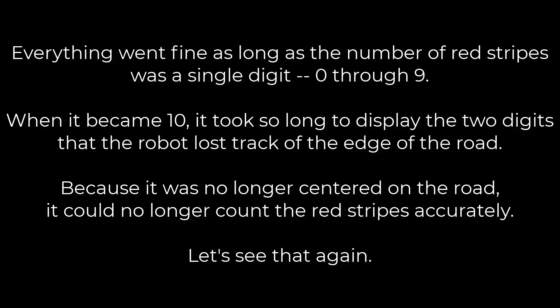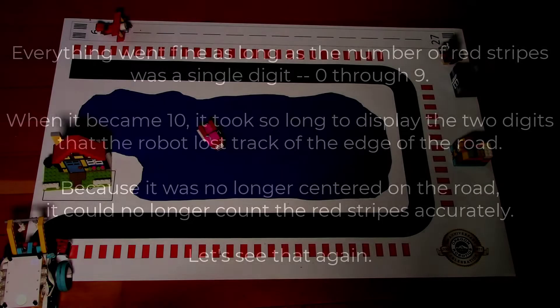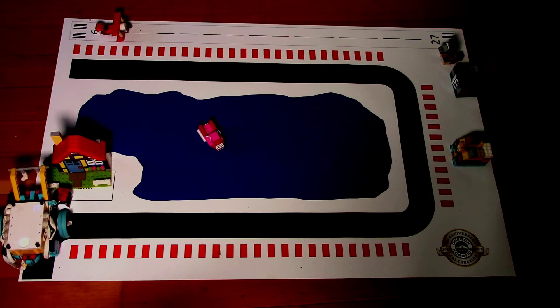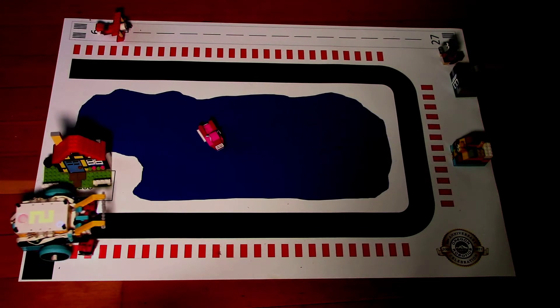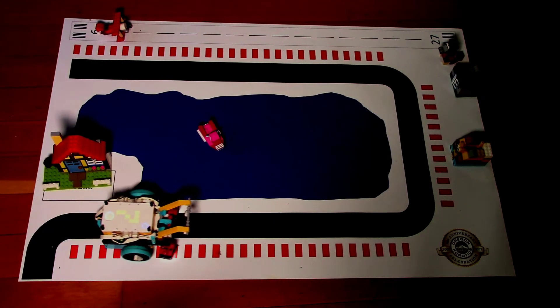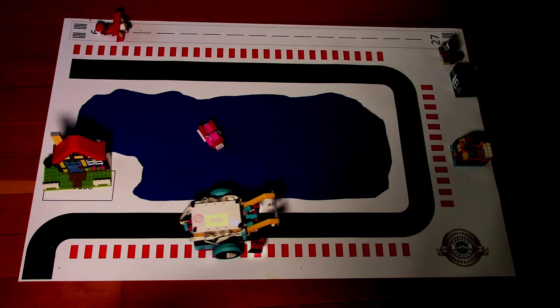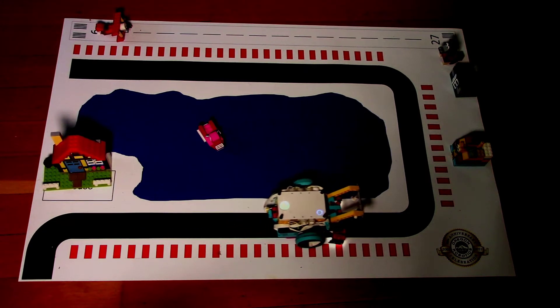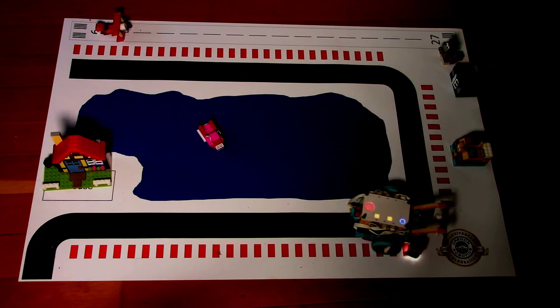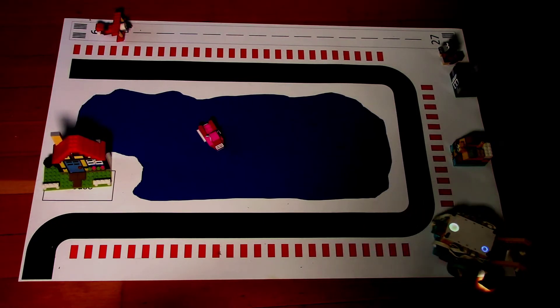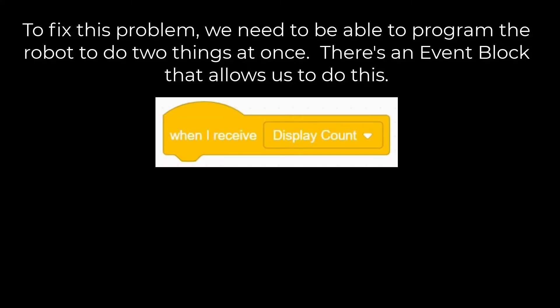Let's see that again. To fix this problem, we need to be able to program the robot to do two things at once. There's an event block that allows us to do this.